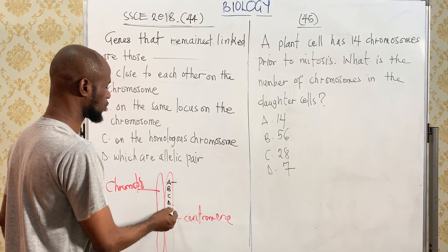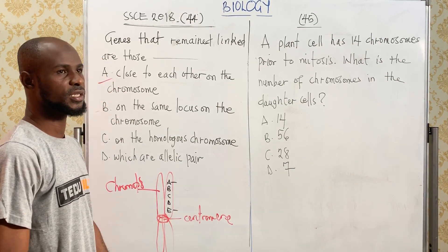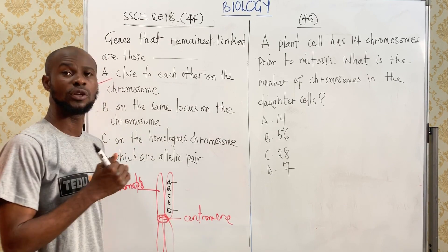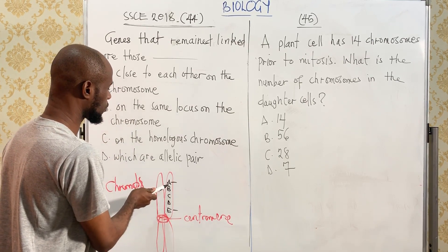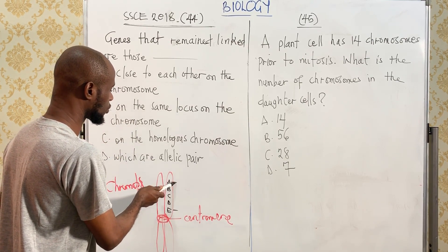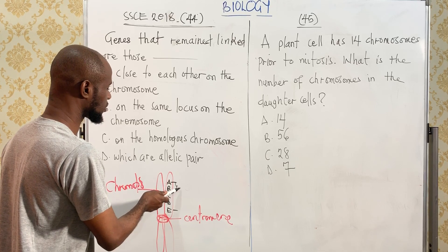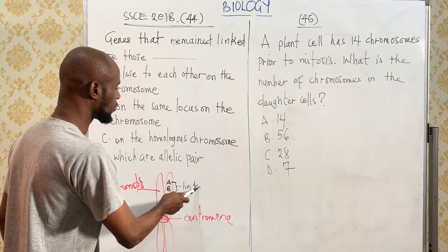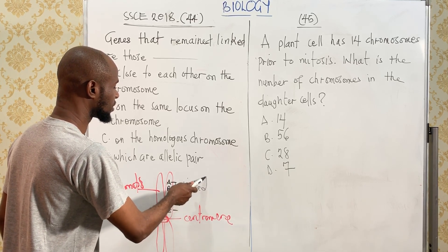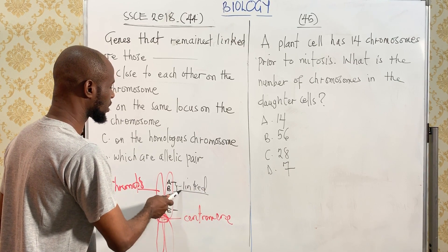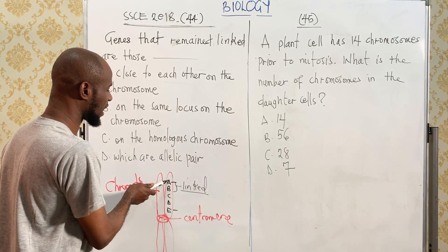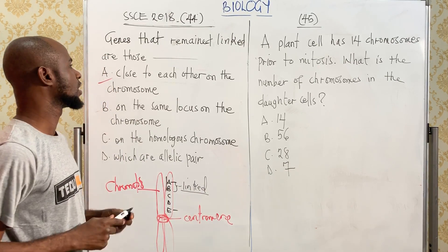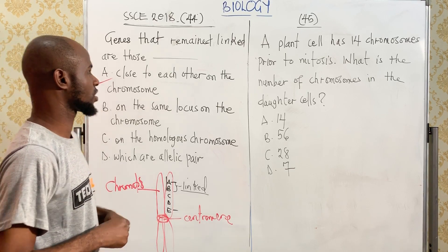Between this chromosome and this chromosome, the chance of linkage is very low. However, between these chromosomes here, the chance of linkage is very high because the genes are located on the same chromosome and are close to each other.